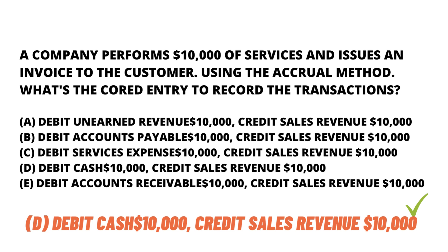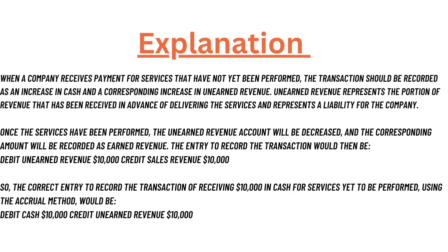The entry to record the transaction will be debit unearned revenue with ten thousand dollars and credit sales revenue with ten thousand dollars. So the correct entry to record the transaction of receiving ten thousand dollars in cash for services yet to be performed using the accrual method will be debit cash and credit unearned revenue with ten thousand dollars.